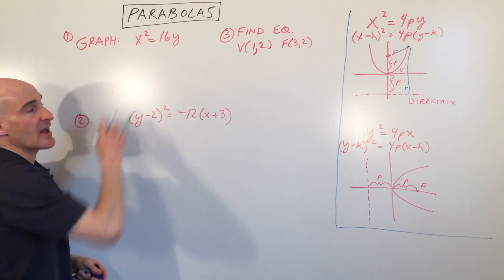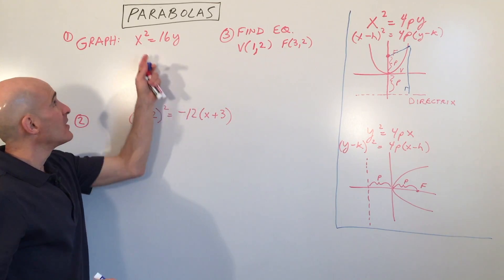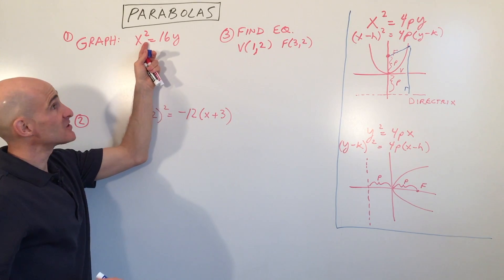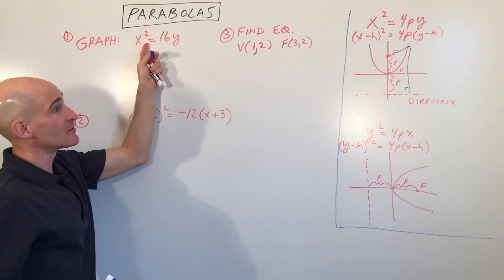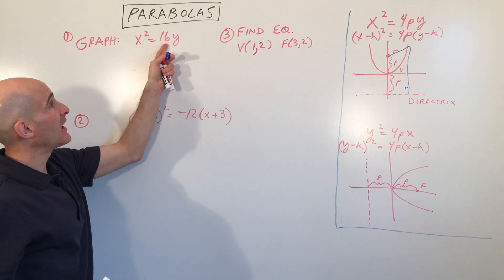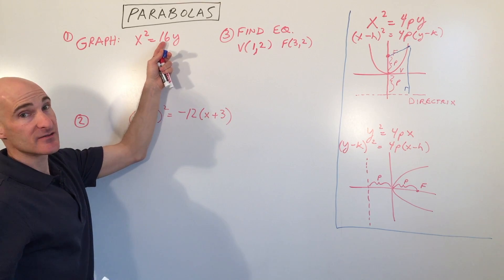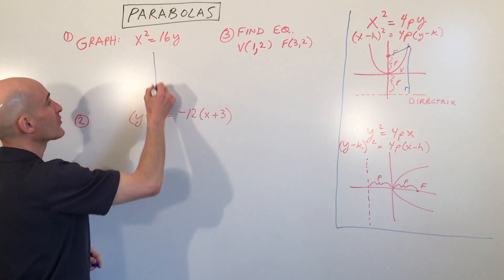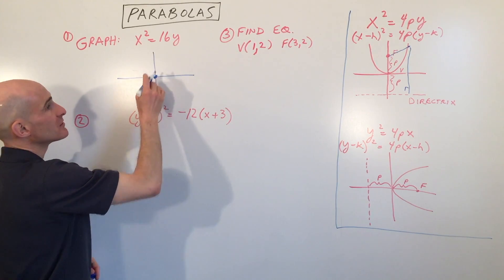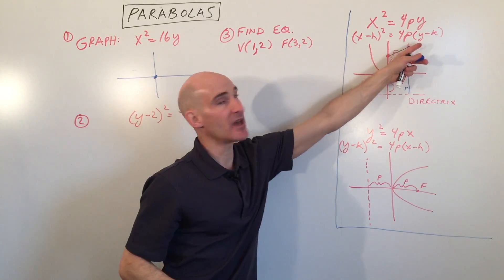Let's get into some examples. Let's say we want to graph this one, x² = 16y. The first thing we want to notice is that the x is squared, so that tells us it's going to be opening up or down. And p is positive, so we can see it's going to be opening up.